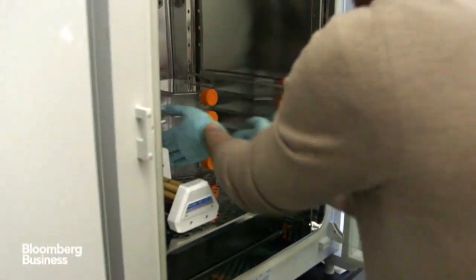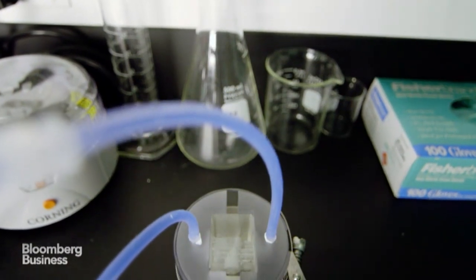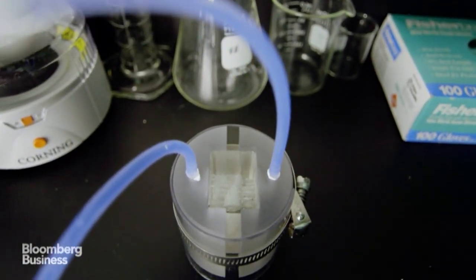So regenerative medicine kind of relies on three things: stem cells, scaffolds, and bioreactors. You need to have the right stem cell source, and so we've got that. And then we need to put those cells into something that helps them understand how to differentiate. What to become.